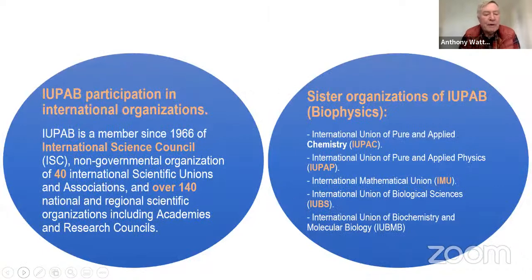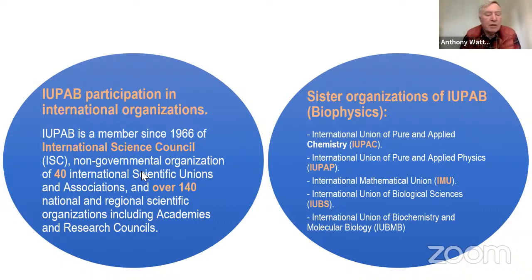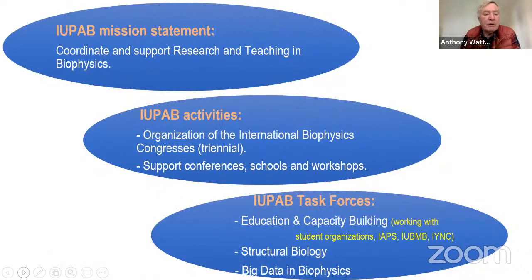We are the world federation of organizations in biophysics. About 61 countries from all around the world are involved, with around 12,000 members including national biophysical societies, research councils, academies, and three regional organizations — including the European Biophysical Societies Association (EBSA) and the Latin American federation. IUPAB is a member of the International Science Council, a non-governmental body containing about 40 international scientific unions that advises governments and the United Nations on science policy and ethics.